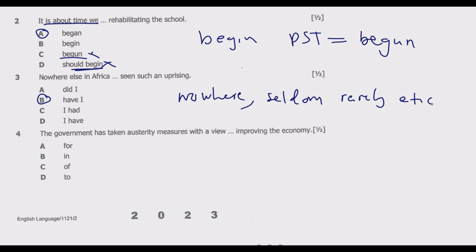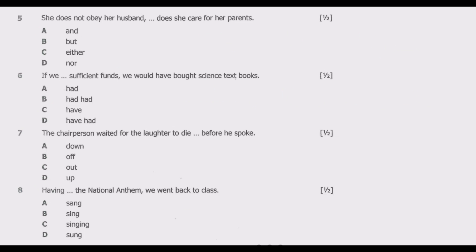In this case we go with sentence inversion. Note that in transformation or rewrite questions, inversion almost always comes up — there is always a question that will ask you to do inversion. Question four: 'The government has taken austerity measures with a view ___ improving the economy.' The key is the phrase 'with a view.' Options: A: for, B: in, C: of, D: to. The correct answer is D — to. The phrase 'with a view to' is used to indicate the purpose or intention of an action.